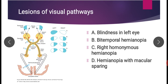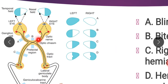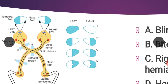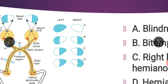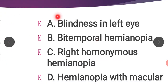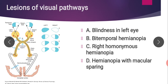Lesion B is at the center of the optic chiasma. The chiasma contains only the nasal fibers from both eyes. When the chiasma is cut, both nasal fiber groups are lost — the nasal half of each eye is damaged, so the temporal half of the visual field of each eye is lost. This is known as bitemporal hemianopia.